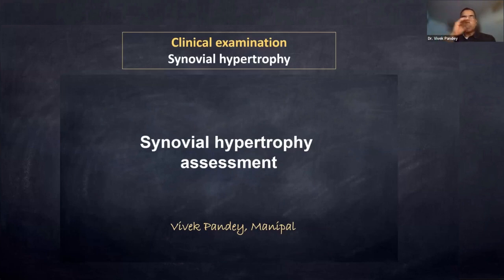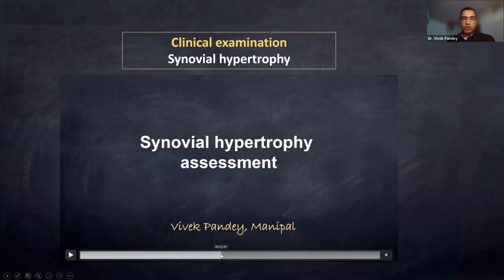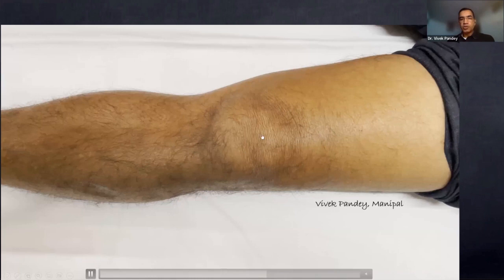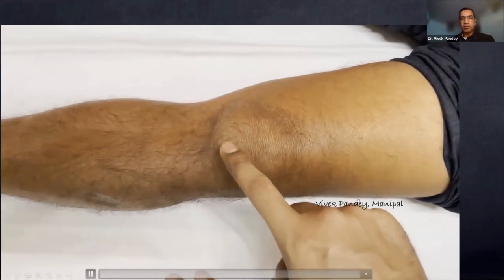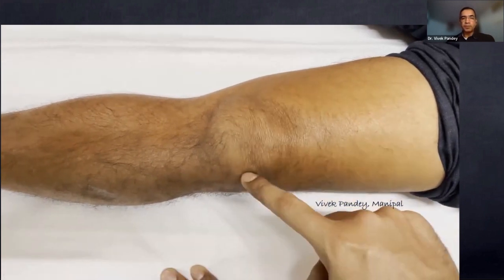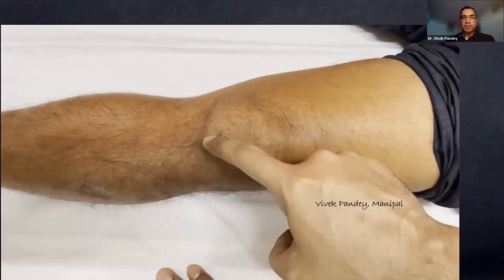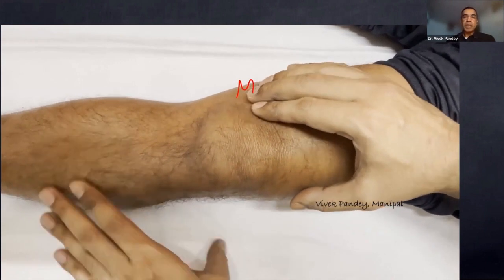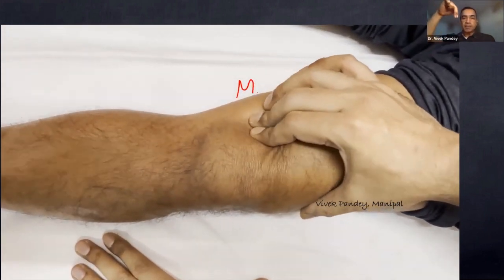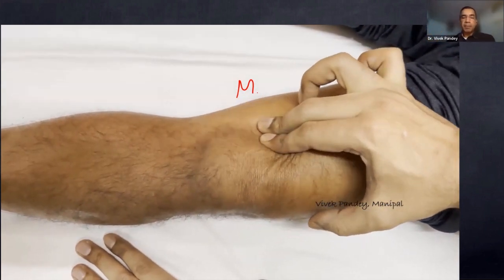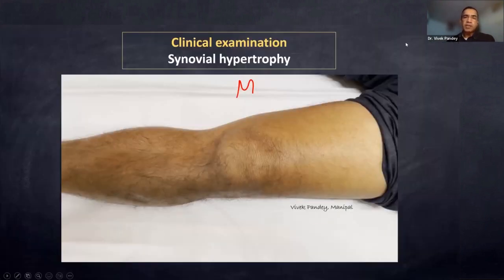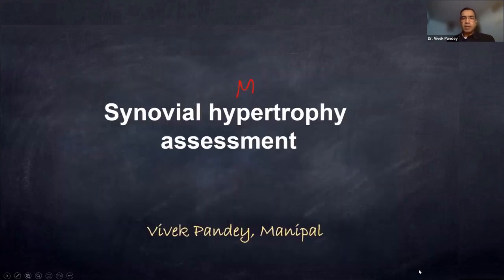The synovium lining the knee joint may become hypertrophied. Synovial hypertrophy is palpated just medial to the medial border of the patella using the pulp of your finger — not poking with fingertips. You can palpate the thickened synovium against the medial femoral condyle. These are some relevant examination tests for knee arthritis.